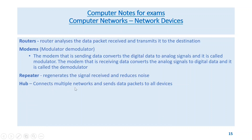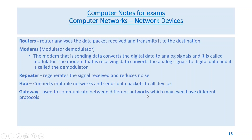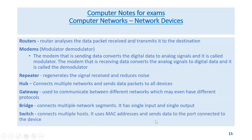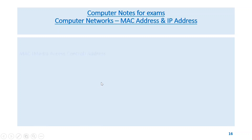Hub connects multiple networks and sends data packets to all devices. Gateway is used to communicate between different networks which may even have different protocols. Bridge connects multiple network segments with a single input and single output.